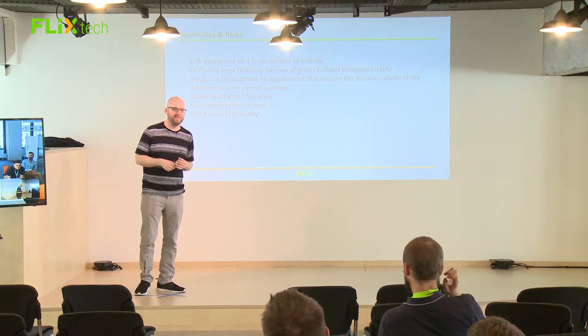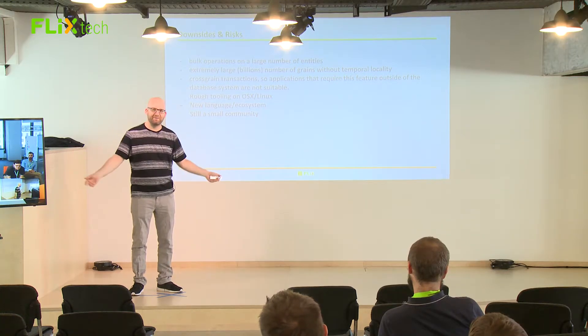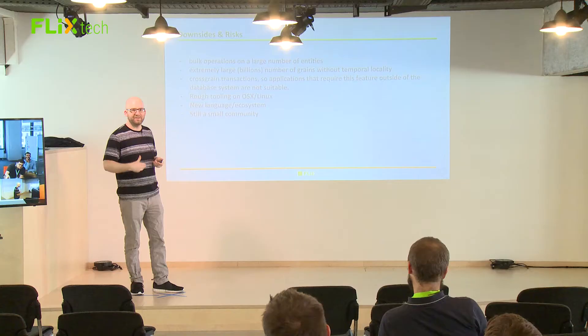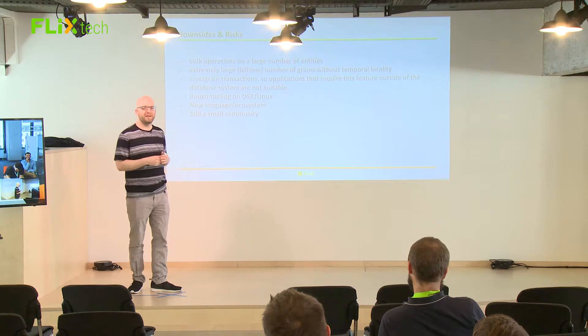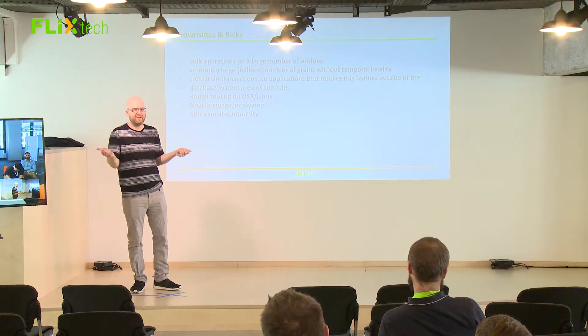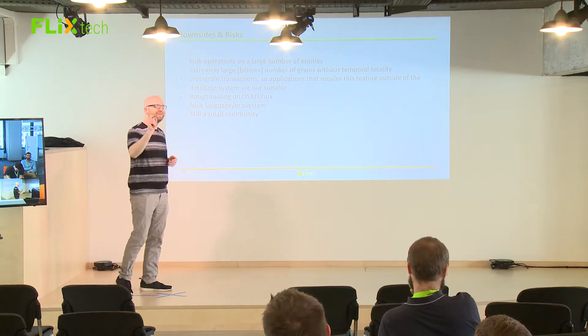What are some downsides and risks? Bulk operations on a large number of entities are not easily possible, because you need to send a message to every single grain you want to update or query. If you want something like all the rides in the system or all the reservations that have ever been in the system, you need to query every single grain — this is not built for that. You would probably want to write all this data into a data lake instead. Extremely large numbers of grains — billions without temporal locality — will also get hard. Though I don't think this is usually a problem for us, because most things don't live that long in our system. Maybe half a million rides on sale but probably not a billion rides on sale at the same time.